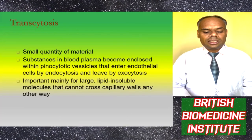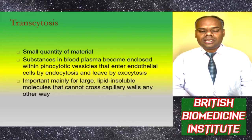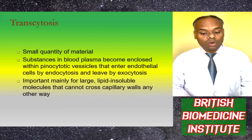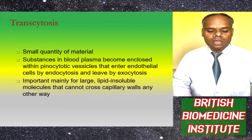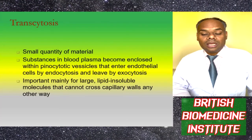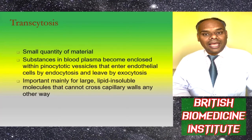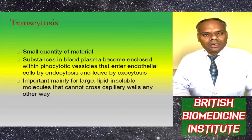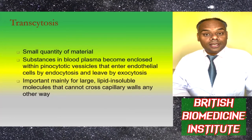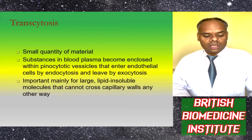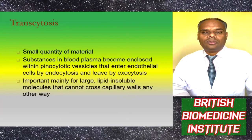Transcytosis involves a small quantity of materials. Substances in blood plasma become enclosed in pinocytotic vesicles that enter endothelial cells by endocytosis and leave by exocytosis. This process is important mainly for large lipid-insoluble molecules that cannot cross the capillary wall any other way.